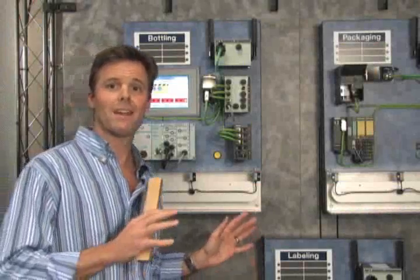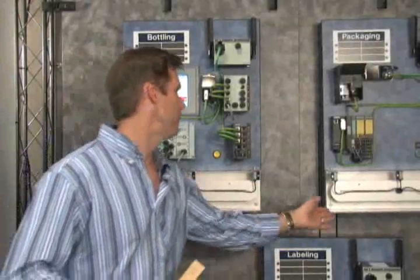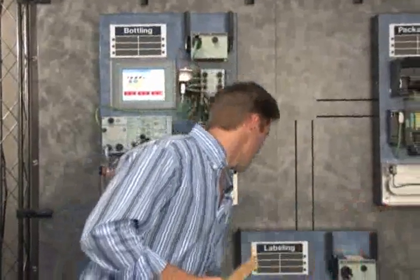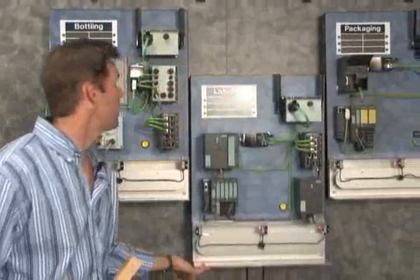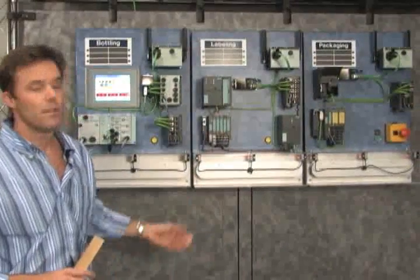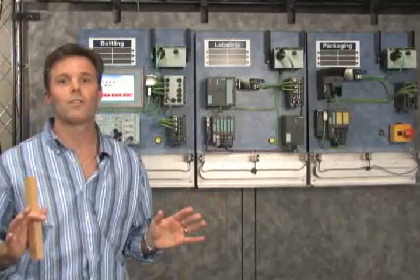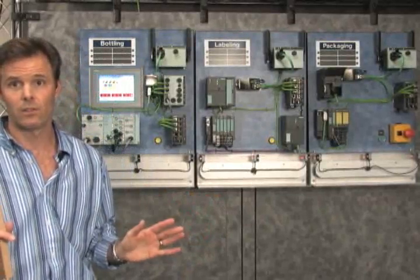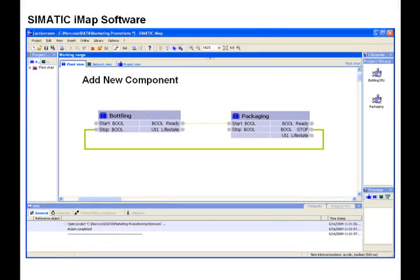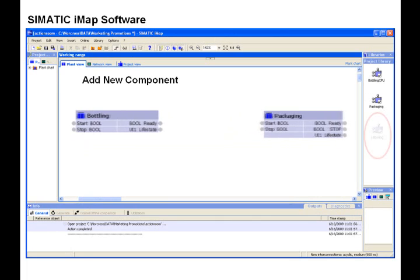But what happens in the future when we add an additional section to this line? This is actually where you truly realize the benefits of component-based automation. To add this new section, we simply open the existing graphical iMap program once again,